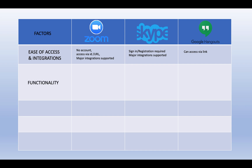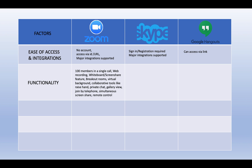The next factor — and probably one of the most important — is functionality. For Zoom, you can have up to 100 members in a single call. There is a web recording function for recording meetings, a whiteboard feature for explaining things graphically, and a screen share feature where participants can see exactly what's happening on your screen.